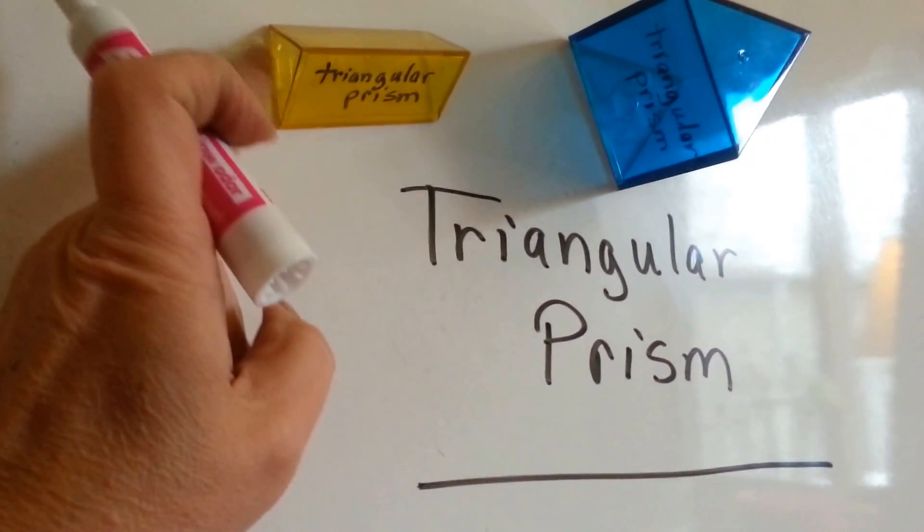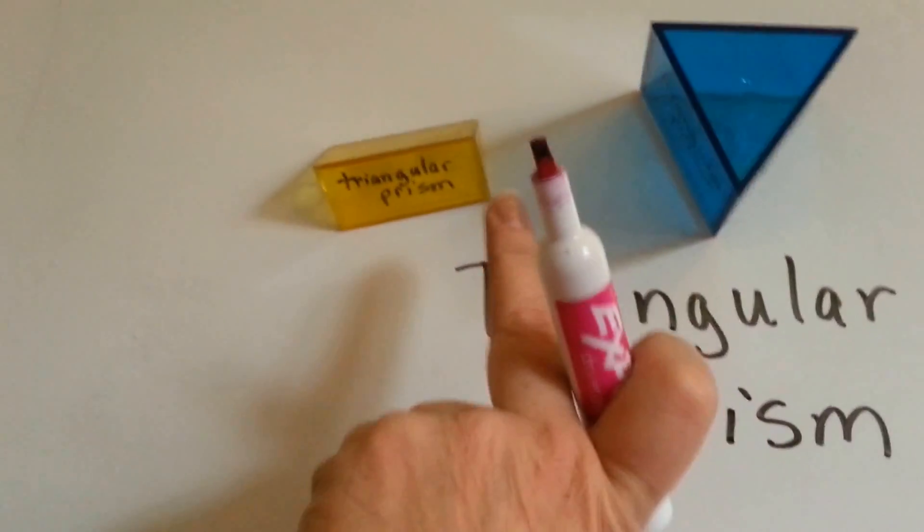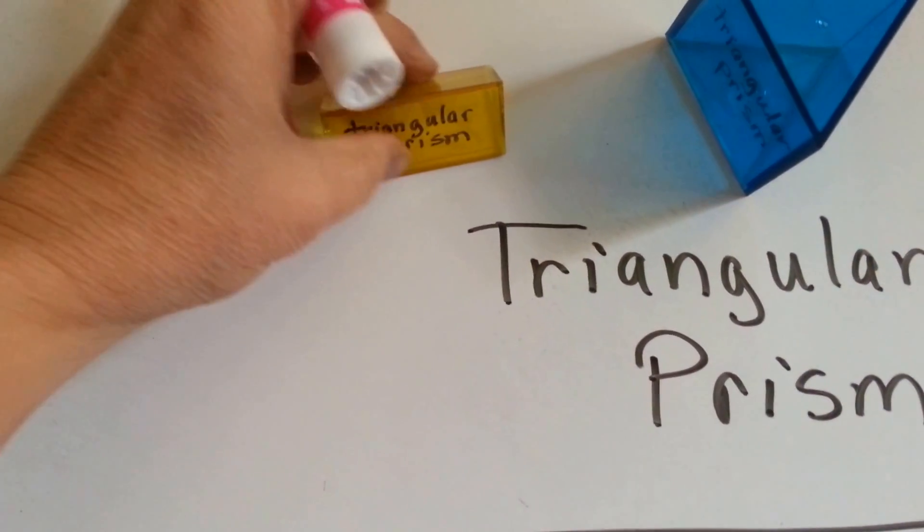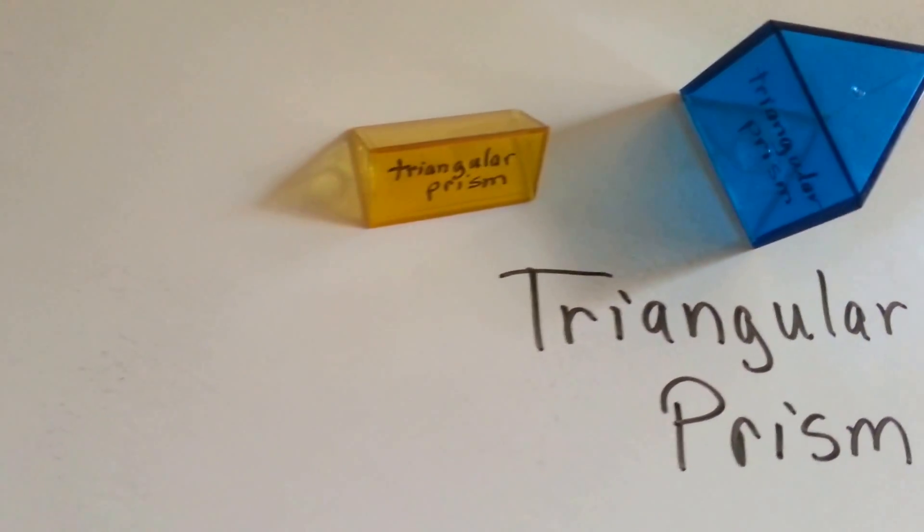Here's a base, it's a triangle, and then here's a base, there's another triangle, and this part is the face.